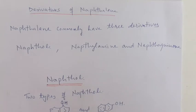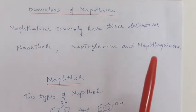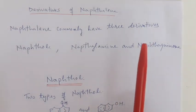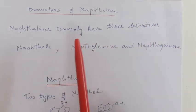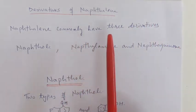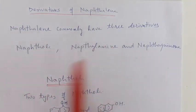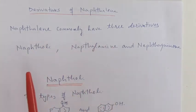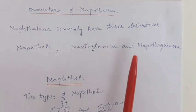This is my fourth lecture on polynuclear hydrocarbon. Last time we studied the structure, synthesis, and properties of naphthalene. Now we will study the derivatives of naphthalene. Naphthalene commonly has three derivatives: naphthol, naphthylamine, and naphthaquinone.